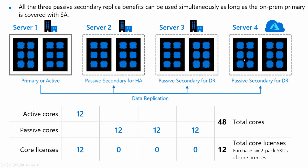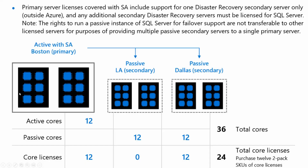This change to the licensing guide was introduced last year, and I really wanted to point it out. In other clouds, yes, you can have a secondary in a cloud other than Azure, but you don't have the luxury of a DR copy in addition — you get just the one. So that's what the guide points out here.